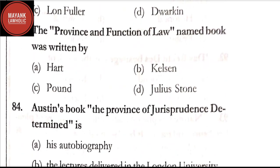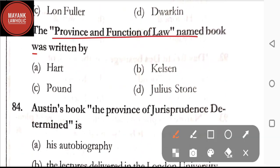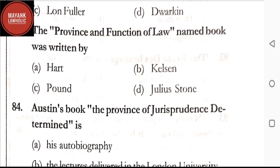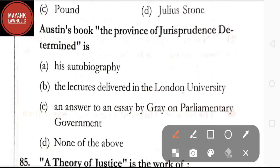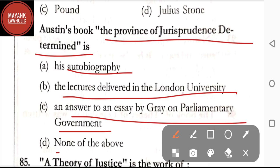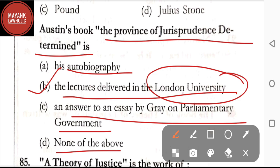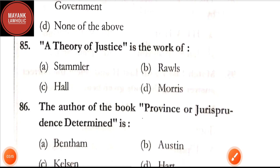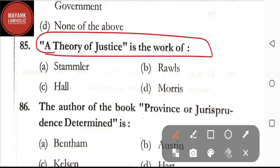Question number 83: the book 'The Province and Function of Law' was written by — Hart, Kelsen, Pound, or Julius Stone. The correct answer is option D, Julius Stone. Question number 84: Austin's book 'The Province of Jurisprudence Determined' is — option A: his autobiography; option B: the lectures delivered in the London University; option C: an answer to an essay by Gray; option D: none of the above. The correct answer is option B, the lectures delivered in the London University.